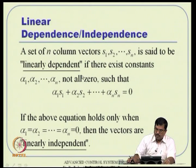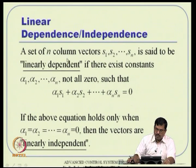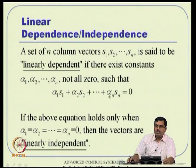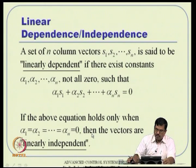What does linear dependence mean? Among the vectors S1, S2 to Sn, one or more vectors are a linear combination of the others. If that happens, those vectors are linearly dependent. If all are independent, no combination of others can substitute any one of them. If you formulate alpha_1*S1 + ... + alpha_n*Sn = 0 and find a non-trivial solution set where not all alphas are zero, the vectors are linearly dependent; if all alphas must be zero, they are linearly independent.